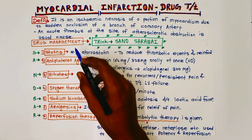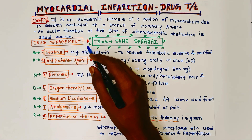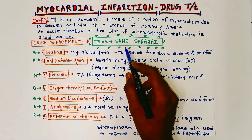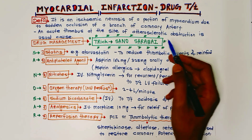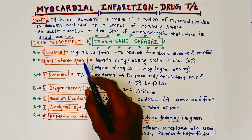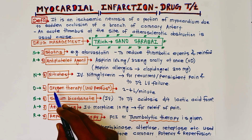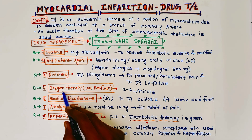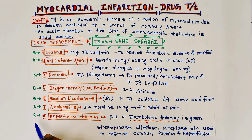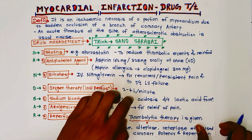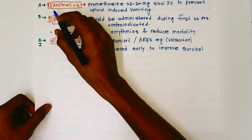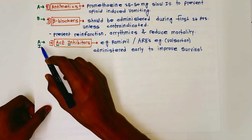The most important point is drug management. I have made a mnemonic trick for this: 'Sanu Sarabai.' S for statins, A for antiplatelet drugs, N for nitrates, U for oxygen therapy, S for sodium bicarbonate, A for analgesics, R for reperfusion therapy — and then Sara-B-AI: A for antiemetics, B for beta blockers, and AI for ACE inhibitors.